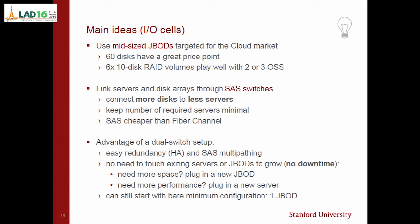We will use mid-size JBODs targeted for the cloud market. 60-disk JBODs have been a great price point, and you can easily build 10-disk RAID volumes with them. The idea of the IO cell is to use SAS switches to link servers and disk arrays — that way we can connect more disks to fewer servers, keeping the number of required servers minimal with fewer licenses. SAS is a lot cheaper than Fibre Channel. We opted for a dual switch setup for easy redundancy with SAS multi-pathing. We don't need to touch existing servers to grow: if we need more space, we plug a new JBOD; if we need more performance, we plug a new server. And we can start with just one JBOD.